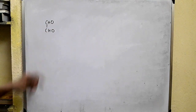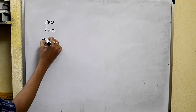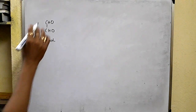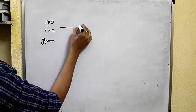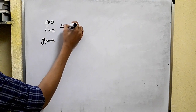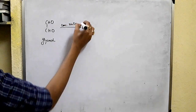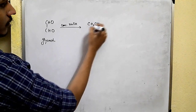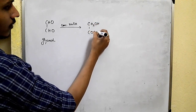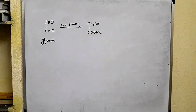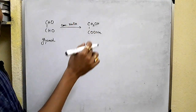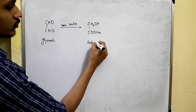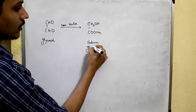For example, glyoxal — in glyoxal, two aldehyde groups are present. When glyoxal is treated with concentrated NaOH, the same molecule undergoes oxidation as well as reduction, and we first get sodium glycolate.